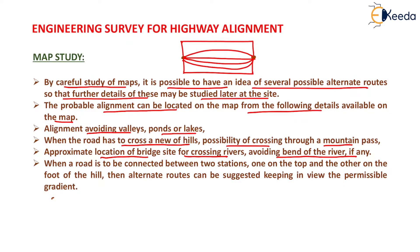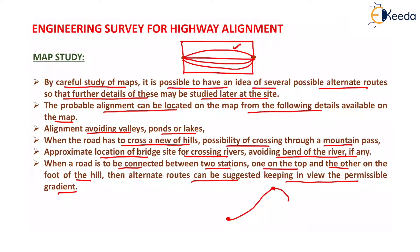The alignment should cross a minimum number of obstructions and should be drawn considering maximum utilization. Approximate locations of bridge sites are also found on this map. When a road is to be connected between two stations — one on the top and the other at the foot of a hill — alternate routes can be suggested keeping in view the permissible gradient, so that it will not exceed the pulling power of the vehicle.